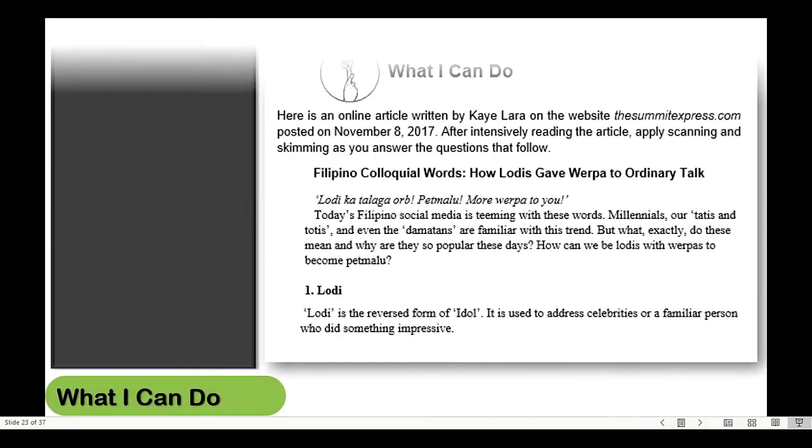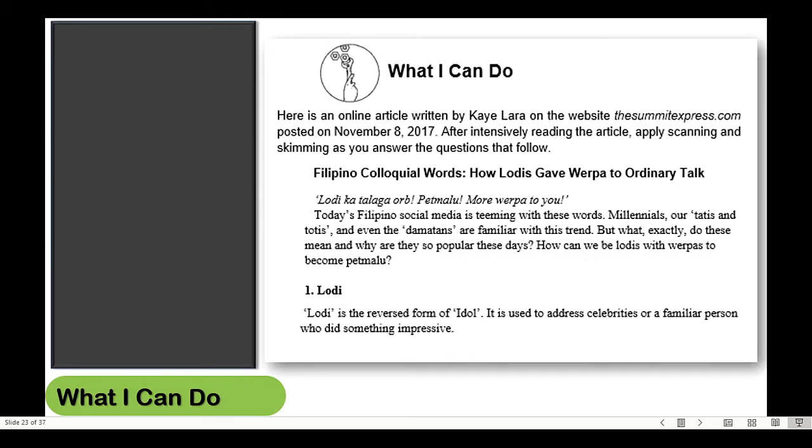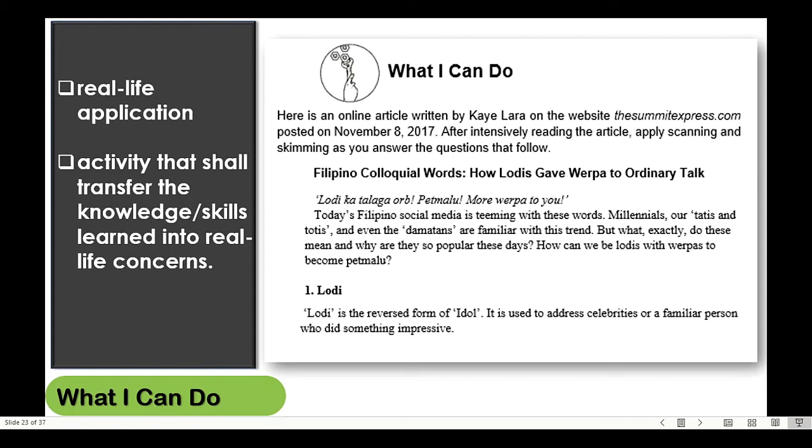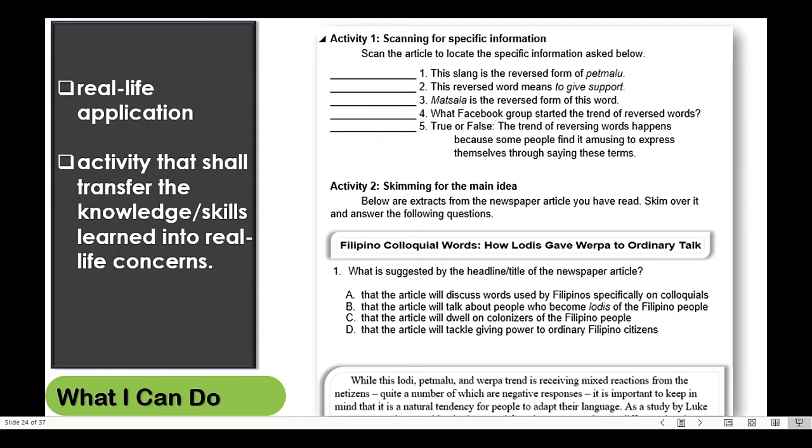What I can do? What should you do? Well, you need to think of an activity or a task that would require the learner to apply in real-life concerns the topic or competency learned from the learning resource. From the sample module, the learner is instructed to read a newspaper article. This is an ordinary and common action. This is followed by an activity that requires the learner to apply the reading strategies scanning and scheming. By doing so, the objectives of scanning for specific information and scheming for central idea are realized.